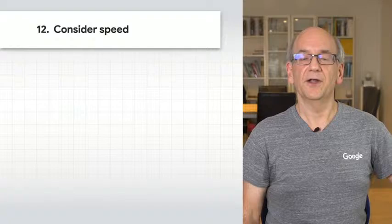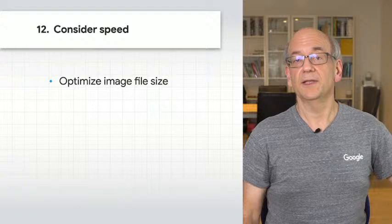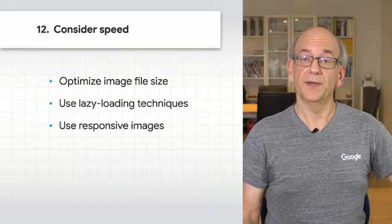Consider speed. Images are often the largest contributor to the overall page size. We recommend applying image optimization using lazy loading and responsive image techniques to provide high quality and fast user experiences. Depending on your website, AMP pages may also be an option for making fast-loading pages.